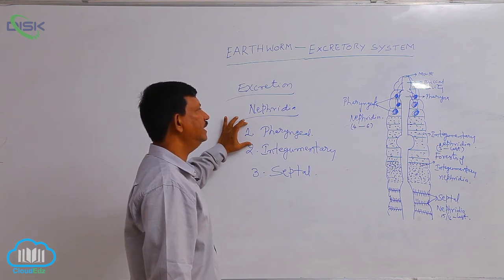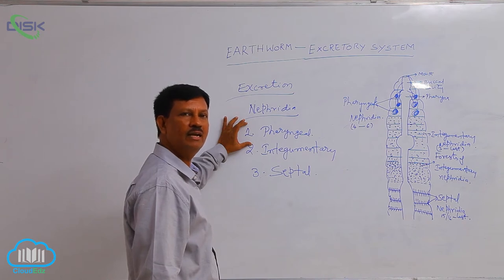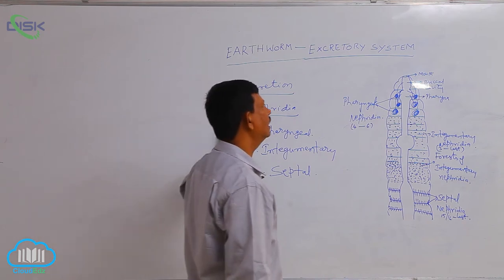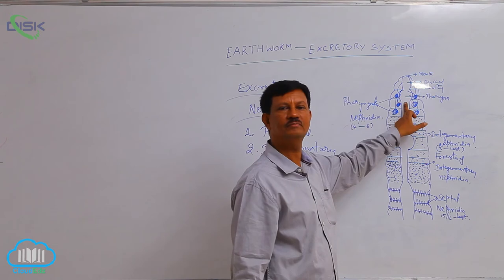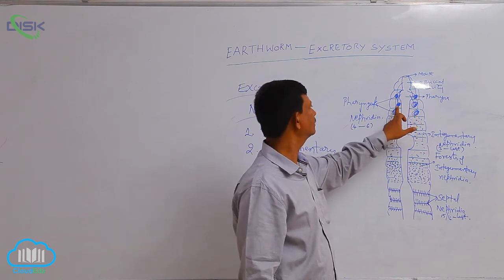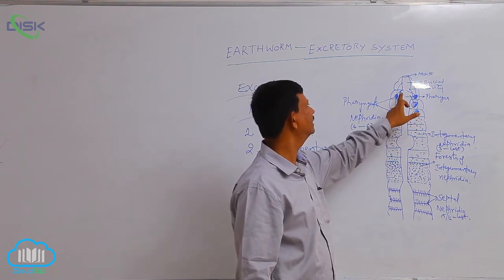These nephridia collect the nitrogenous waste material from the surrounding, which is then poured into the alimentary canal through ducts known as pharyngeal nephridial ducts.